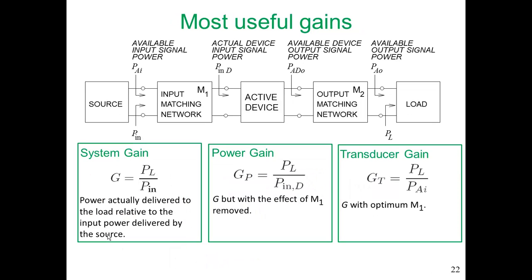There are many definitions of gain; here are three very useful ones. System gain is the ratio of the power delivered to the load to the power that's input to the input matching network. The power gain GP is the power delivered to the load divided by the power input to the active device. The transducer gain GT is the power delivered to the load divided by the available power from the source.